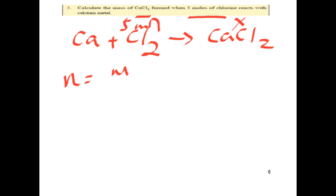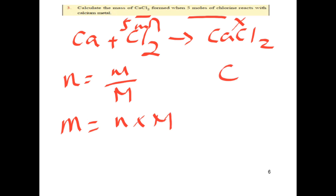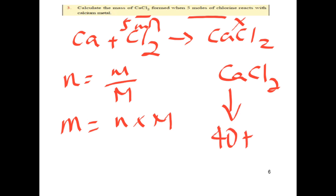The mole is mass over the molar mass. The mass of calcium chloride: calcium plus chlorine is 35.5 grams per mole, so the molar mass of calcium chloride is calculated from calcium and chlorine (35.5 g/mol each).